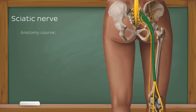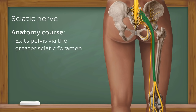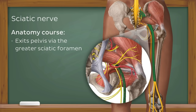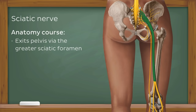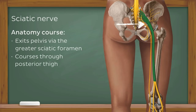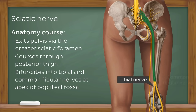The sciatic nerve is a key nerve of the lower limb as it supplies most muscles and skin of the posterior compartment of the thigh, the leg, and the foot. The sciatic nerve exits the pelvis to enter the posterior compartment of the thigh via the greater sciatic foramen. We can see that the sciatic nerve emerges below the piriformis muscle. The sciatic nerve then courses inferiorly through the posterior aspect of the thigh and when it reaches the apex of the popliteal fossa, it terminates by bifurcating into the tibial and common fibular nerves.